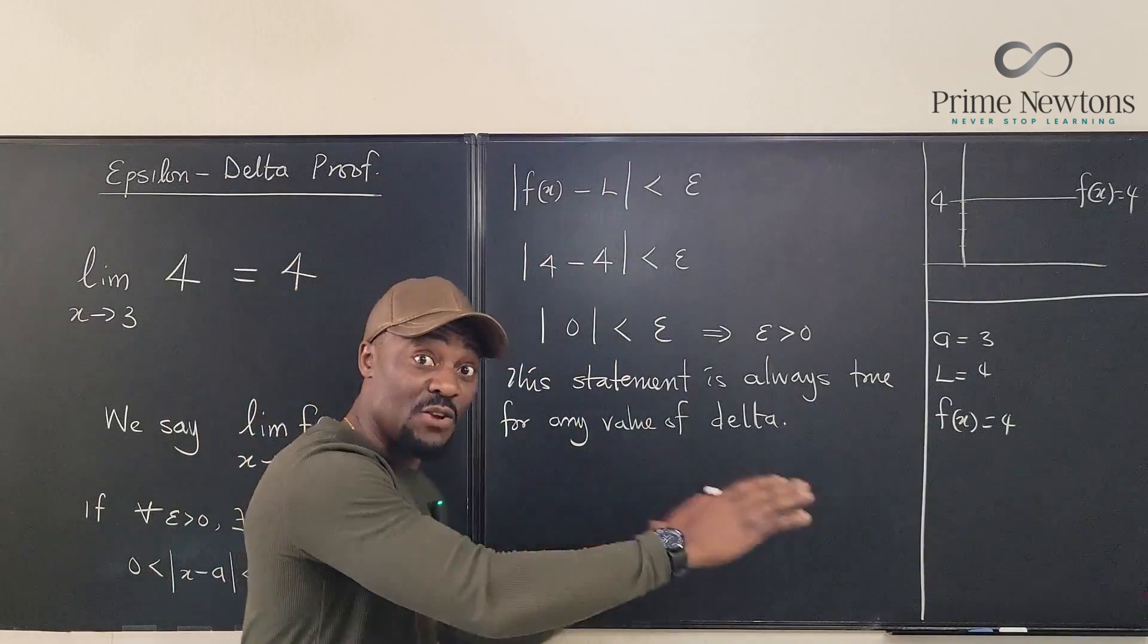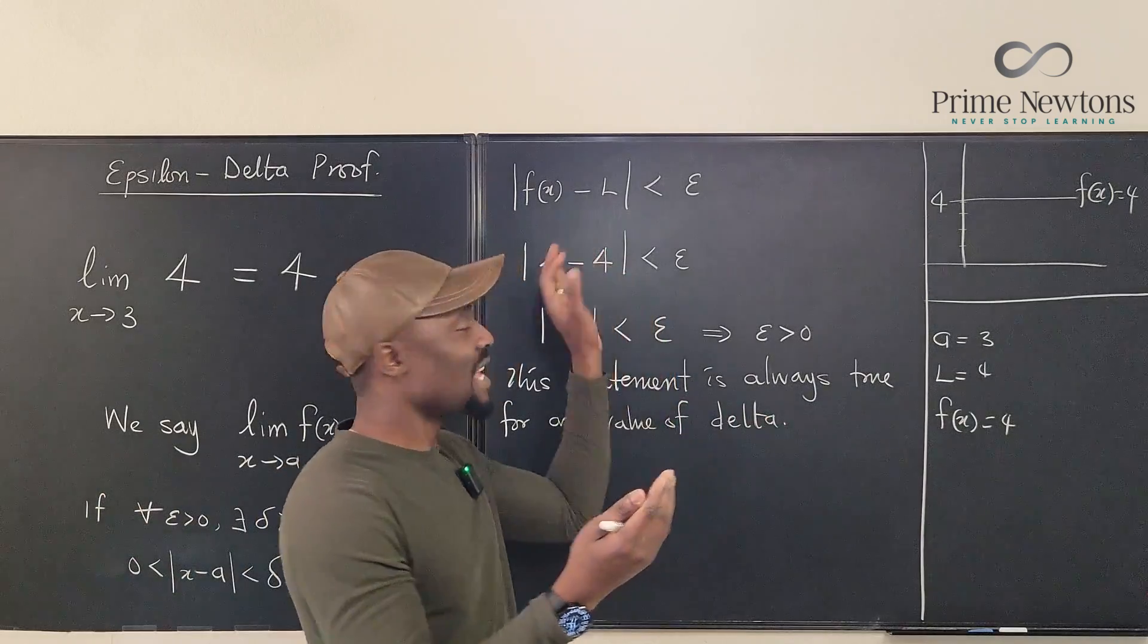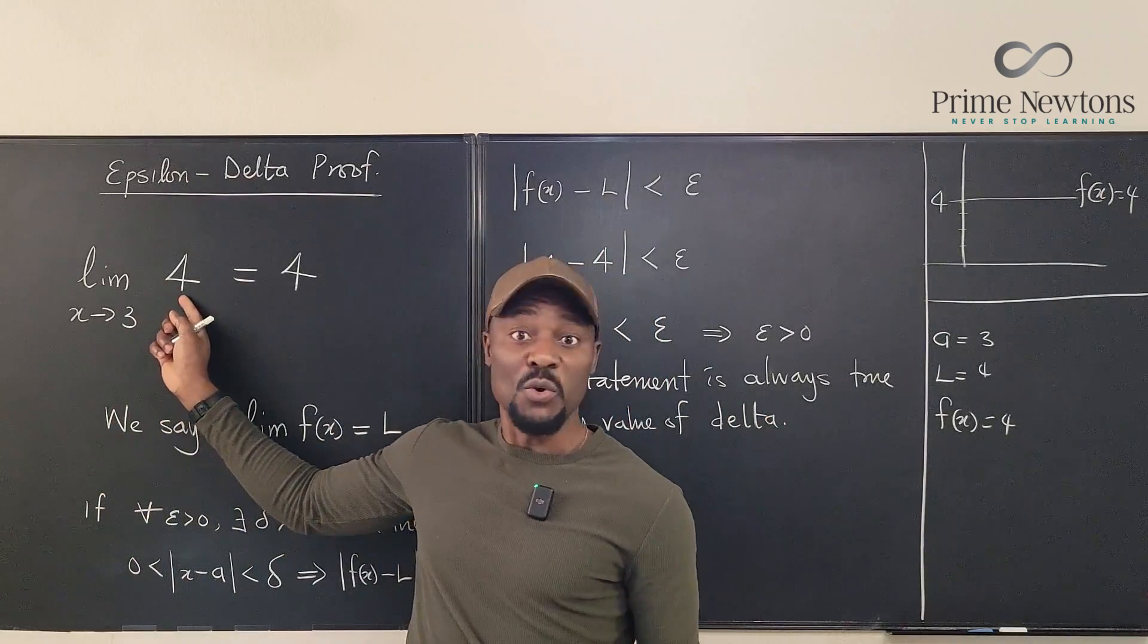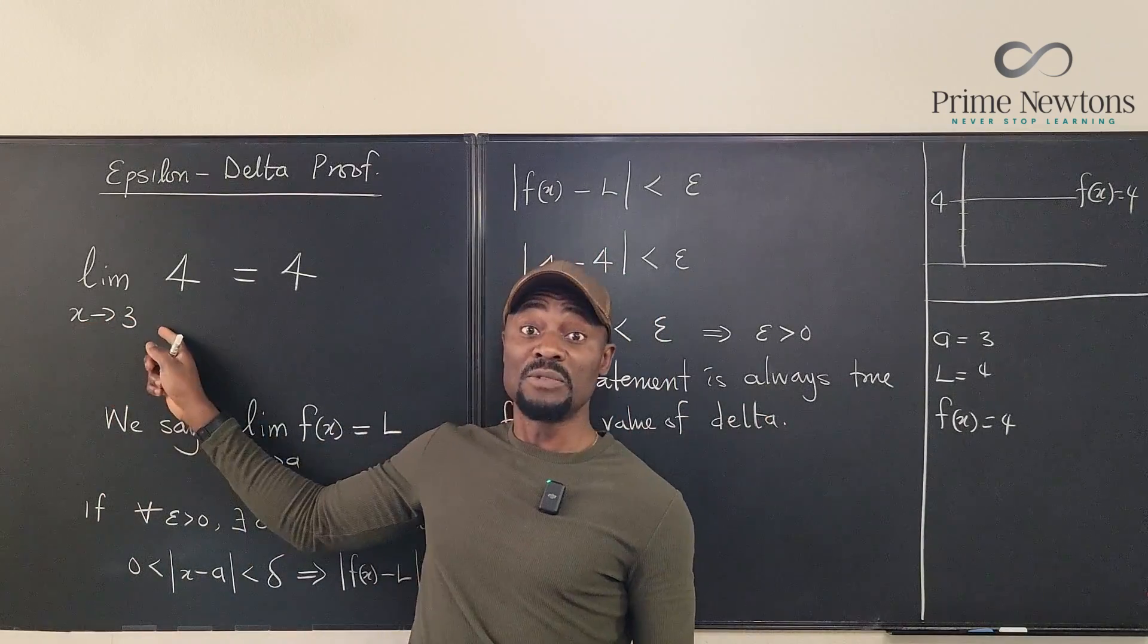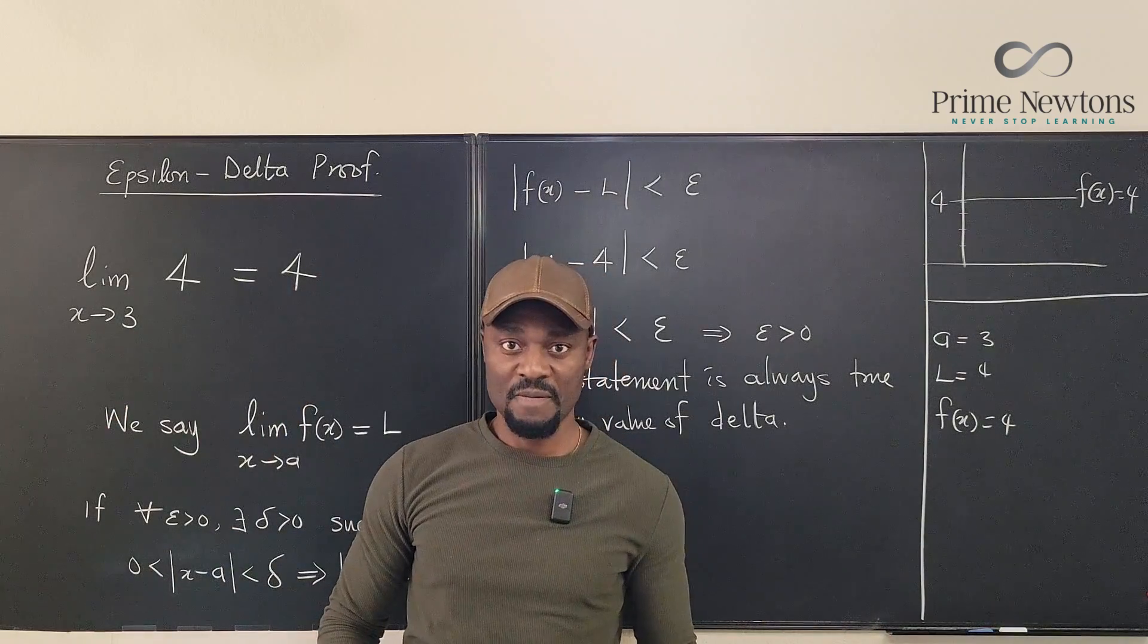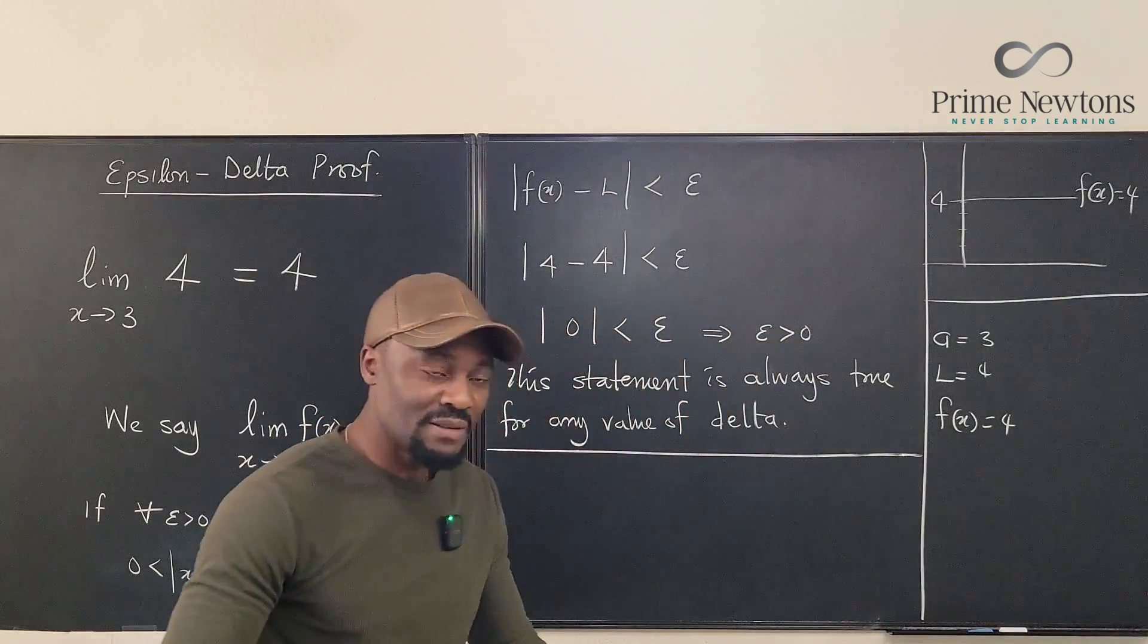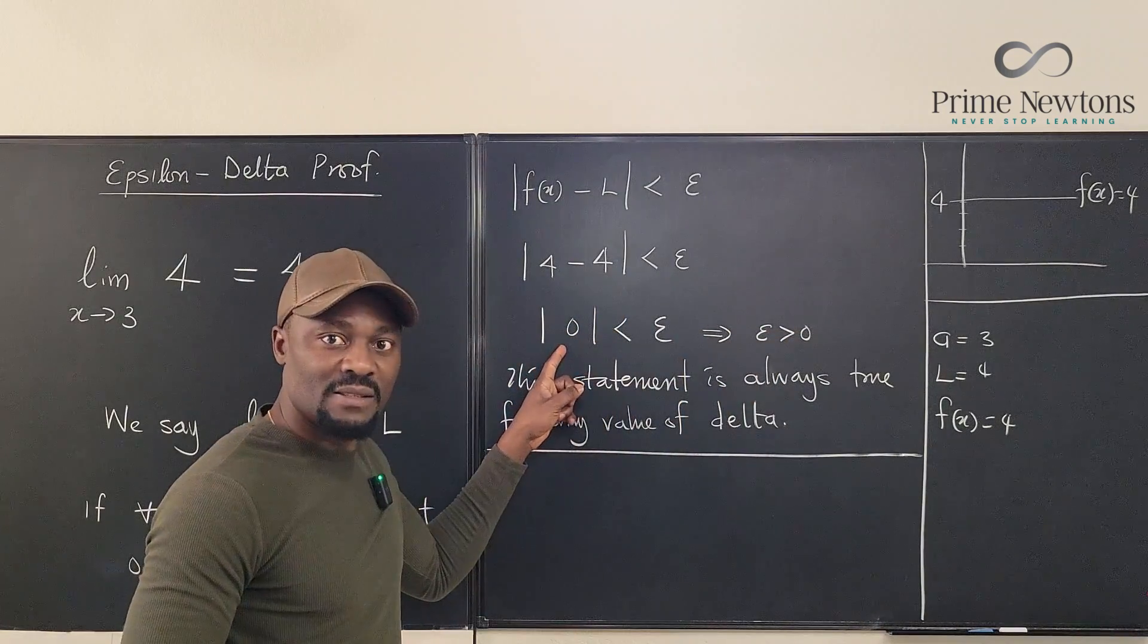statement is always true for any value of delta. So any value of delta you pick, it doesn't matter what the number is, you're going to have the same limit to be true. So whether you are far away from 3 or you're very close from 3, the limit is always going to be 4. Let me show you why that is true. So let's do this. Assuming I want to manipulate this.